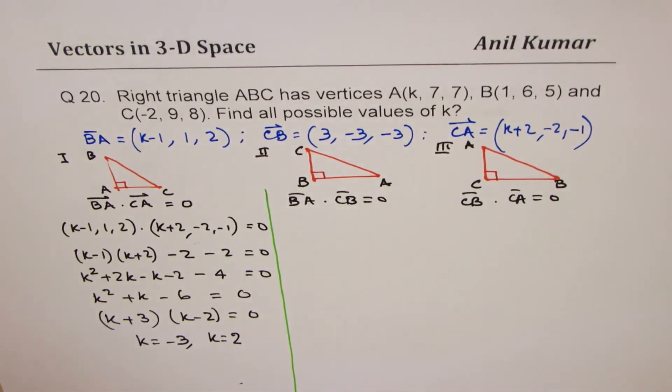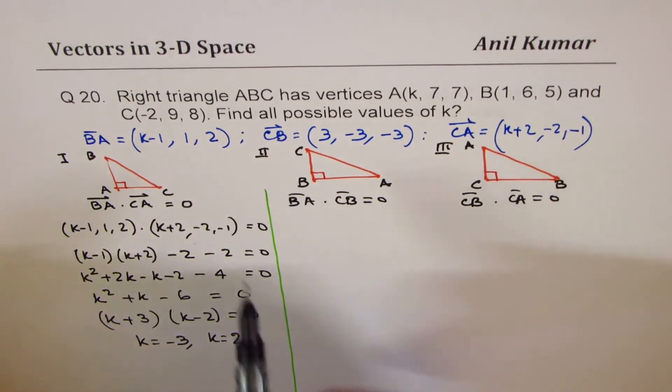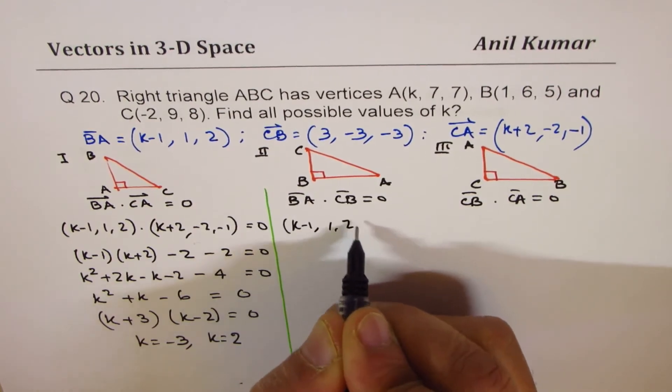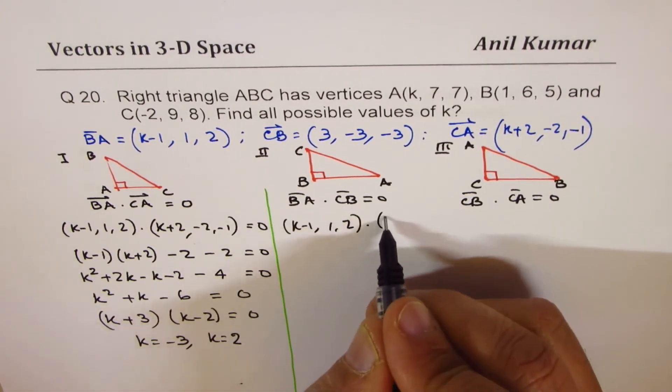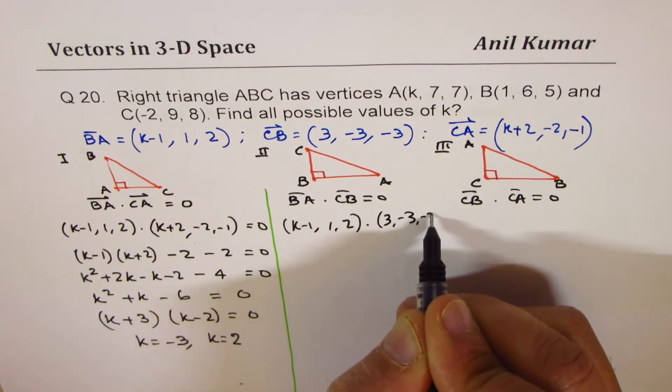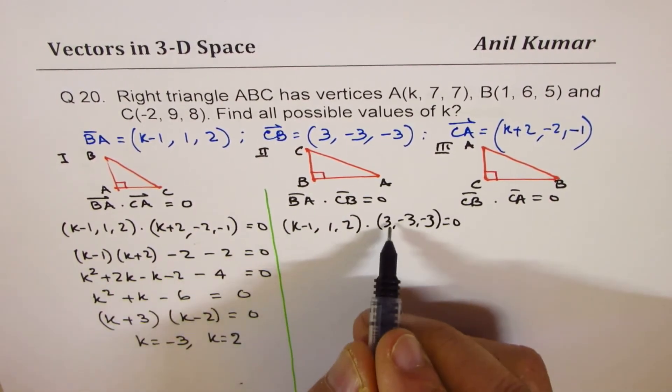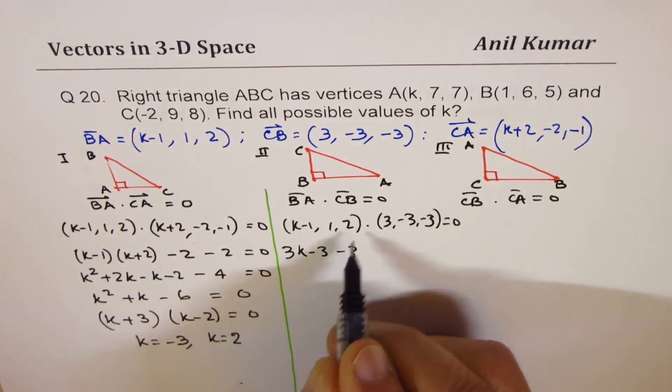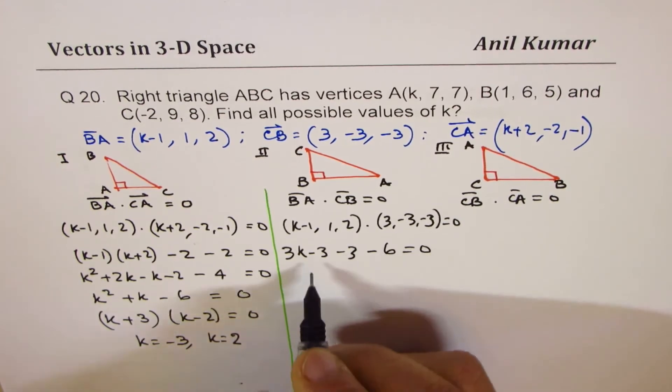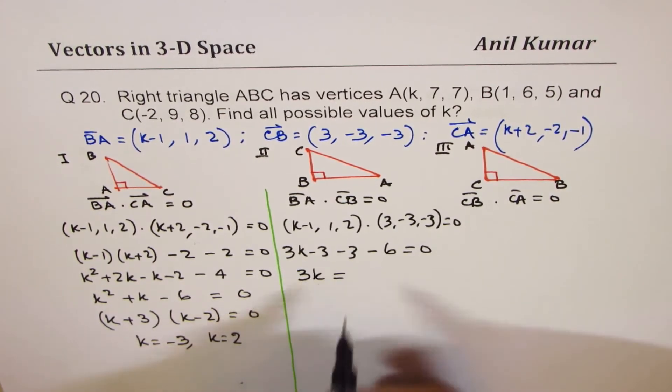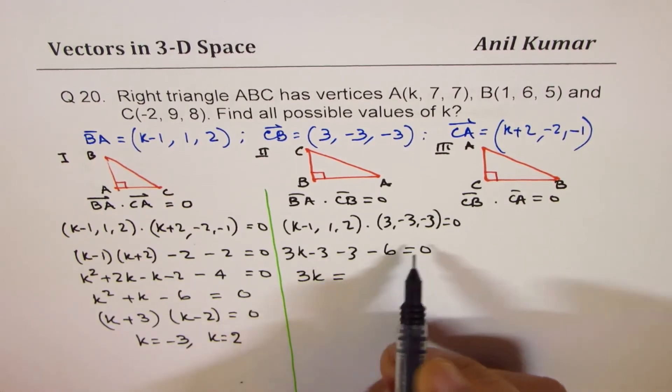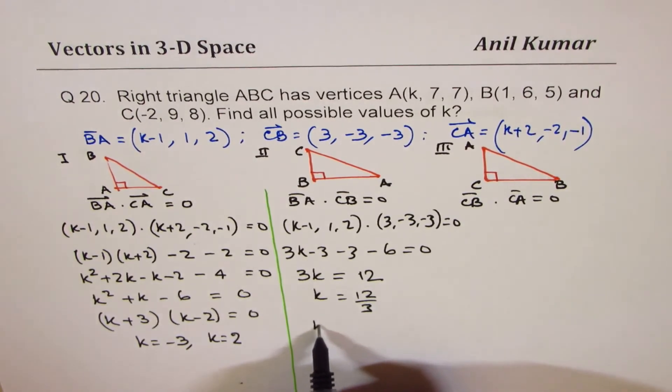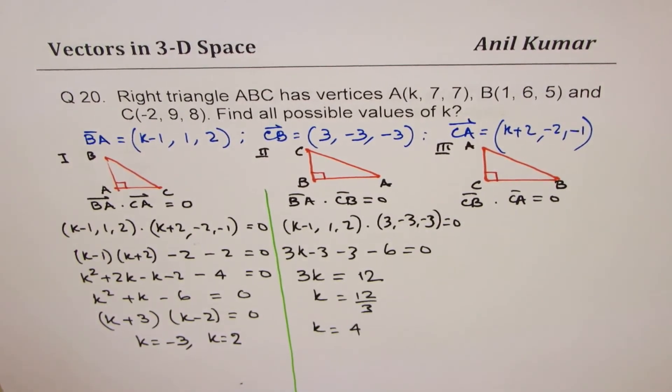Now let's do the second case, which is BA dot CB. BA is (K−1, 1, 2) dot CB is (3, −3, −3) equals to 0. So that means 3 times K−1 is 3K−3, minus 3, and 2 times −3 is minus 6 equals to 0. So we have 3K equals to 12, so K equals to 12 over 3. So we get K equals to 4.